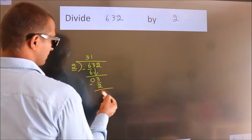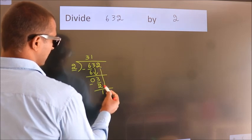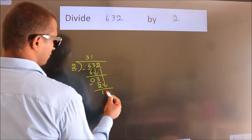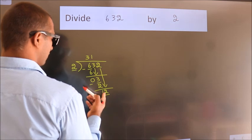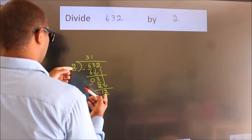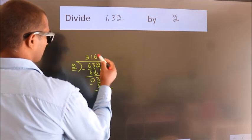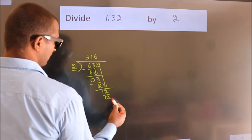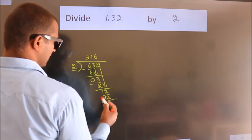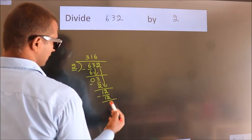After this, bring down the beside number. 2 down, so 12. When do we get 12? In 2 table, 2 times 6 is 12. Now, we subtract. We get 0.